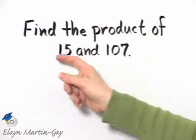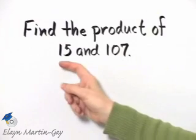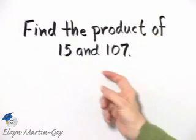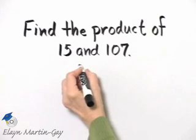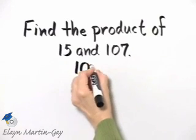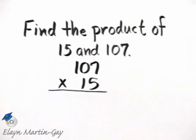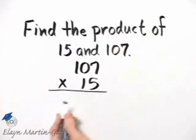I can do this by saying 15 times 107 or 107 times 15. Why is that? Remember when we multiply, order does not matter. So I'll write this as 107 times 15. If you wrote it as 15 times 107, that's perfectly okay. Let's multiply.